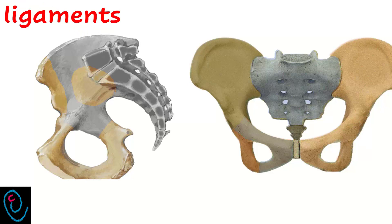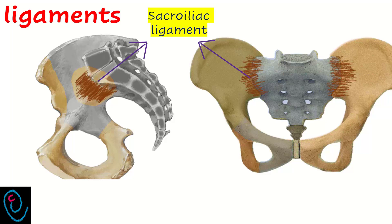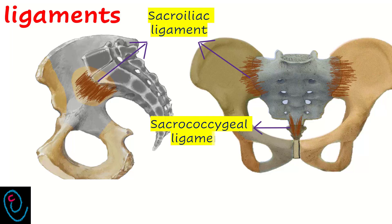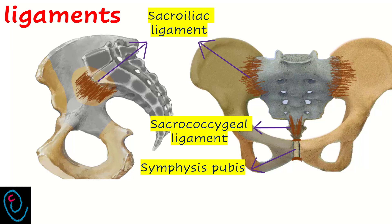Joints are supported with ligaments. The sacroiliac joint is supported by sacroiliac ligaments. The sacrococcygeal joint is supported by sacrococcygeal ligaments. The anterior sacrococcygeal ligament consists of some fibers that descend from the anterior surface of the sacrum to the anterior surface of the coccyx. The symphysis pubis is supported by four ligaments. On the upper border, the superior pubic ligament.